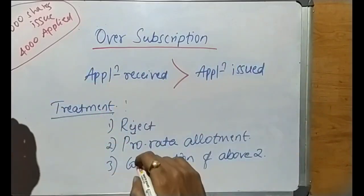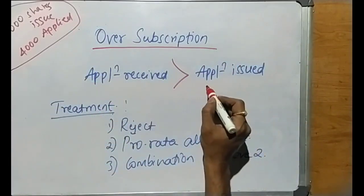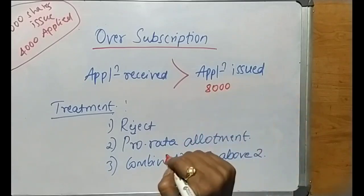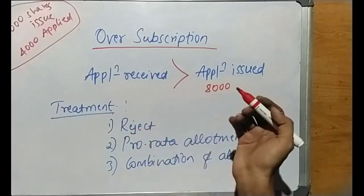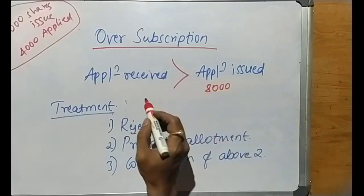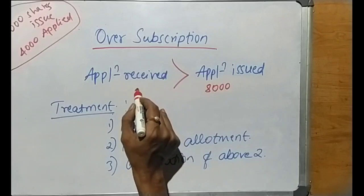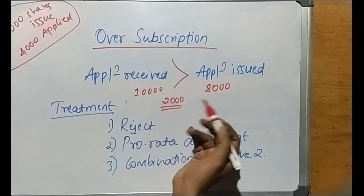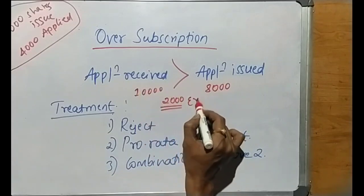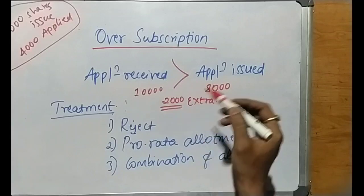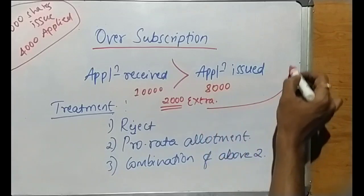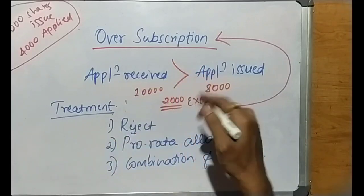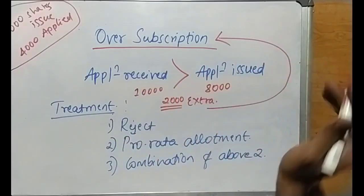When the company issues shares, there are many applications received. For example, we have 8,000 shares issued, but from public subscription we receive 10,000 applications. So 2,000 shares extra are applied. These extra applications — where more shares are applied for than issued — is what we call over-subscription. The company receives more applications than the shares it issues to the public.